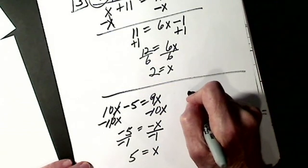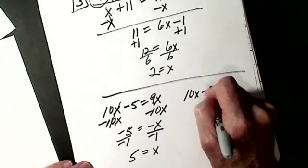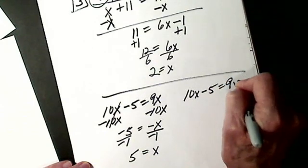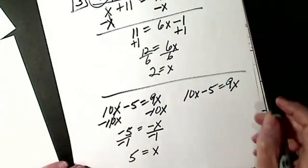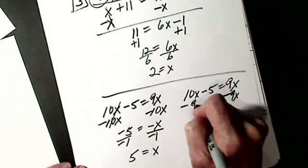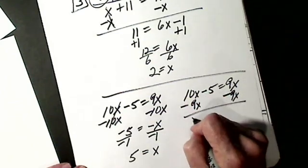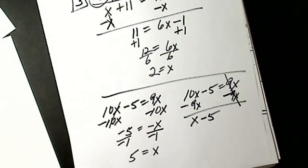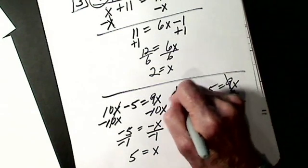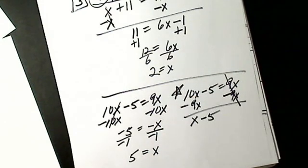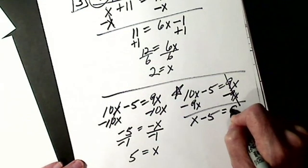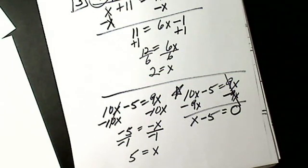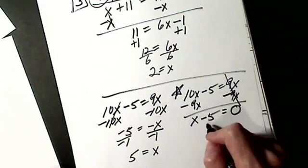Or, for 10X minus 5 equals 9X, if you subtract 9X from each side, here you get X, here you get minus 5, that goes to 0. My answer is not negative 5 — this is what people make a mistake on. If a whole side goes to 0, you have to put the 0. Then it's a two-step problem. Add 5, X equals 5.